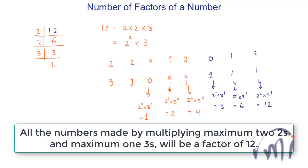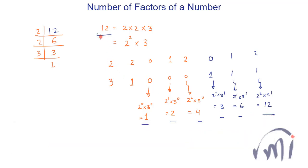So all these numbers — 1, 2, 4, 3, 6, and 12 — are factors of 12, and there is no other natural number which is a factor of 12. So we have got a total of 6 factors for the number 12.